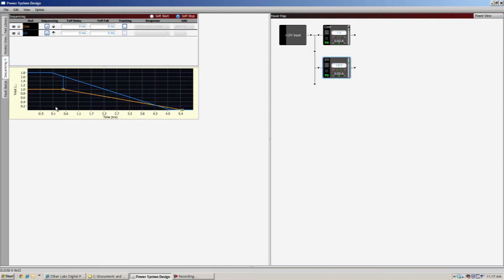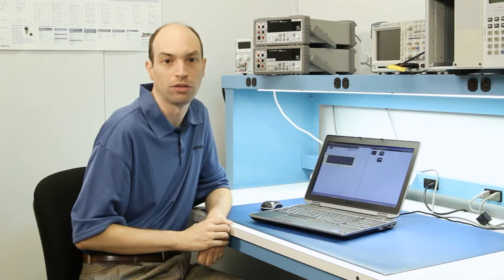The first rail starts dropping. Once it reaches its power grid threshold, the falling threshold, it sends a signal across the DC bus to the core, and then that rail will begin its shutdown process.